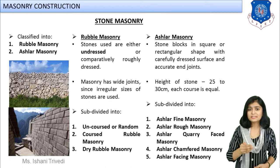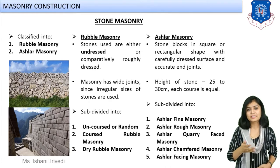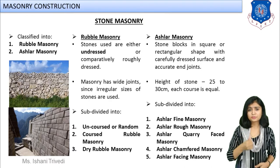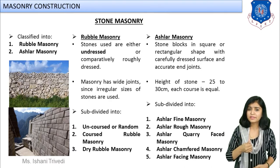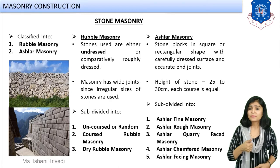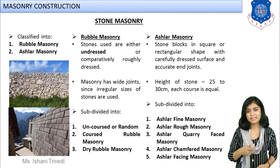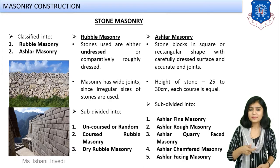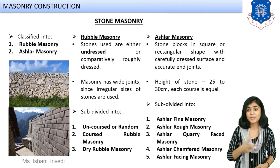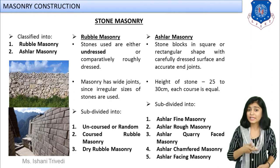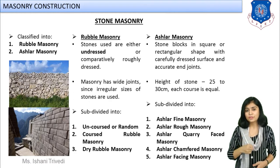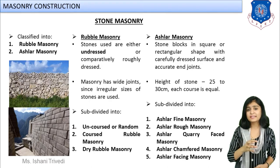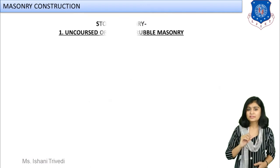Rubble masonry is classified into three types and ashlar masonry into five types. For rubble masonry, we have coarse rubble masonry, uncoarse rubble masonry, and dry rubble masonry. Whereas in ashlar masonry, we have ashlar facing, ashlar chamfered, ashlar quarry faced, ashlar rough tooled, and fine tooled. This is the basic classification of full stone masonry construction.